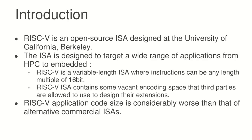RISC-V is an open ISA, as Jeremy just said, designed at the University of California, Berkeley. It's designed to target a wide range of applications, from embedded all the way to high-performance computing. It has two key features enabling this: the ISA itself is variable length, meaning instructions can be different lengths — multiples of 16 bits — and the ISA has some vacant encoding space that third parties can use to design their own extensions.